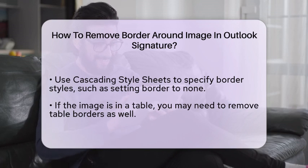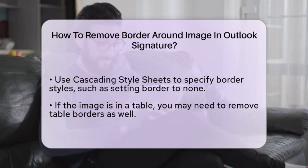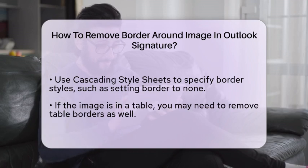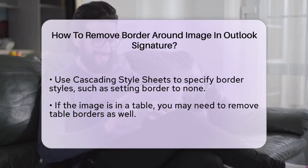If your image is placed within a table, you might need to remove the table borders as well. To do this in Outlook, select the table, go to the Format Text tab, and adjust the border settings. Keep in mind that this may not directly affect the image border unless the border is part of the table design.